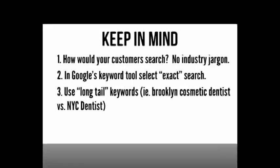There are some important things to keep in mind when you are doing keyword research. Think about things from the customer's perspective. Stay away from industry jargon. Select the exact search option on the left hand side of the keyword tool for the most accurate picture of the approximate number of searches. In bigger cities it is going to be very hard to rank for the keywords that show the most searches in Google's keyword tool. It is therefore often better to go after long tail keywords. For example, in New York City it is going to be easier to rank for the term Brooklyn sedation dentist than it will be to rank for NYC dentist. I've included a great article and video on how to come up with a list of keywords for your business in the resources link below this video.